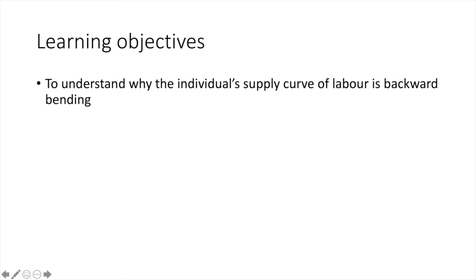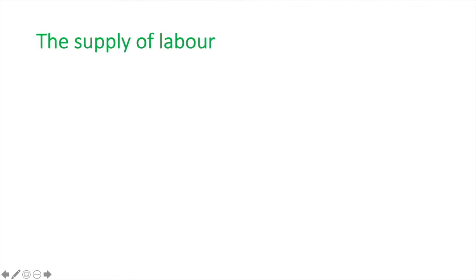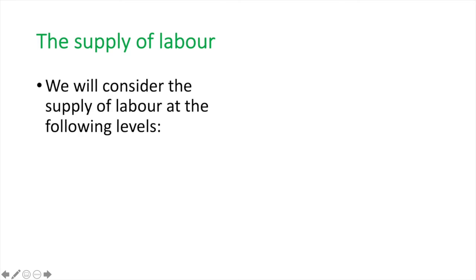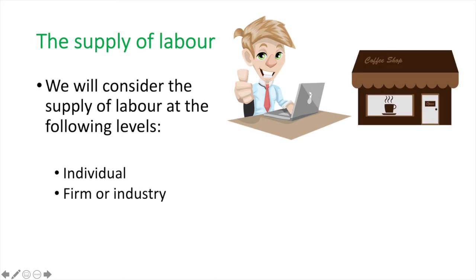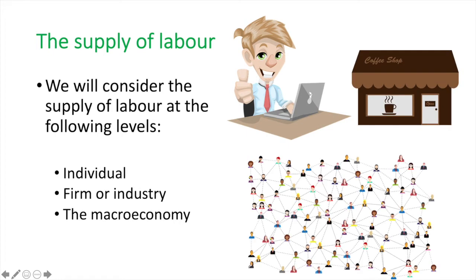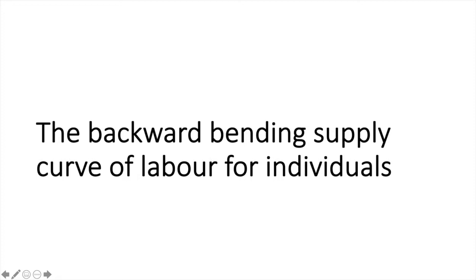In this video, we'll examine the individual supply curve of labour and figure out why exactly it is backward bending. As we start our discussion on the supply of labour, it is important to note that we will approach this section by considering three levels of the supply of labour: the individual, the firm or industry, and the macroeconomic level.